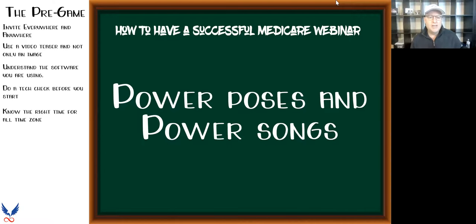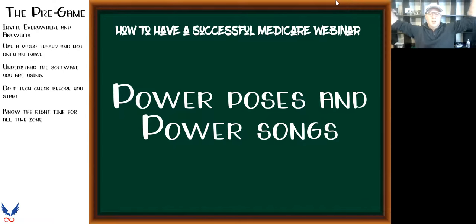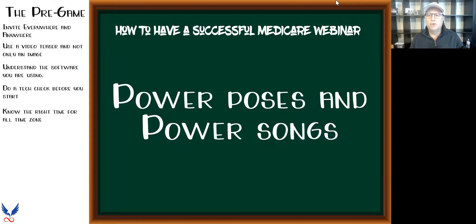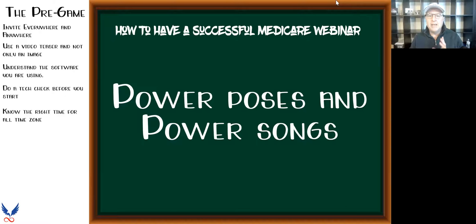Here's one I love — power poses and power songs. If you've ever done public speaking, you always have those nerves going in. The power pose is like having that air guitar going, getting pumped up with your arms up. You want to pull all that energy into the front of you. Then pair it with a power song — for me it's 'Welcome to the Jungle' or Thunderstruck by AC/DC. In the chat box, let me know what your power song is. Someone said 'Eye of the Tiger' — that's a good one too!